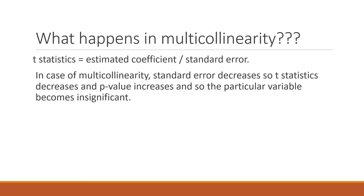What happens in multicollinearity? The t-statistic is calculated as the estimated coefficient divided by the standard error. In case of multicollinearity, the standard error increases, so the t-statistic decreases and the p-value increases, and so the particular variable becomes insignificant.